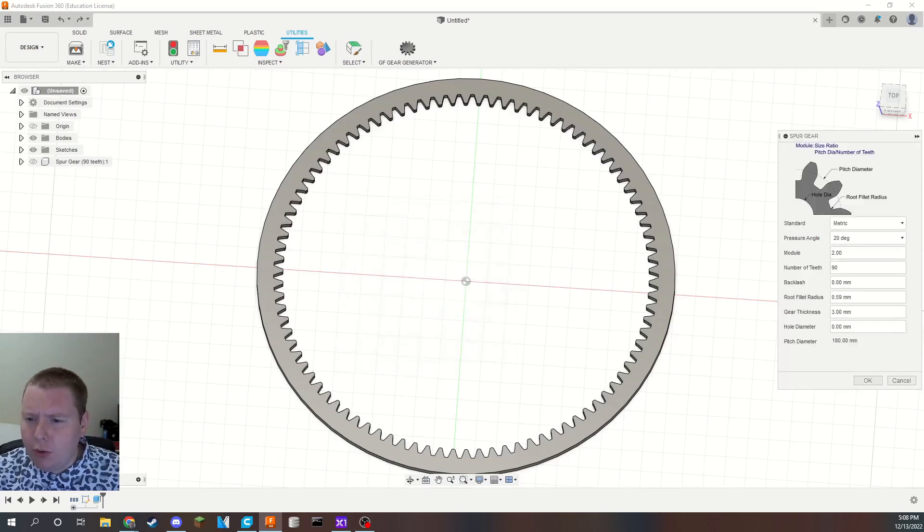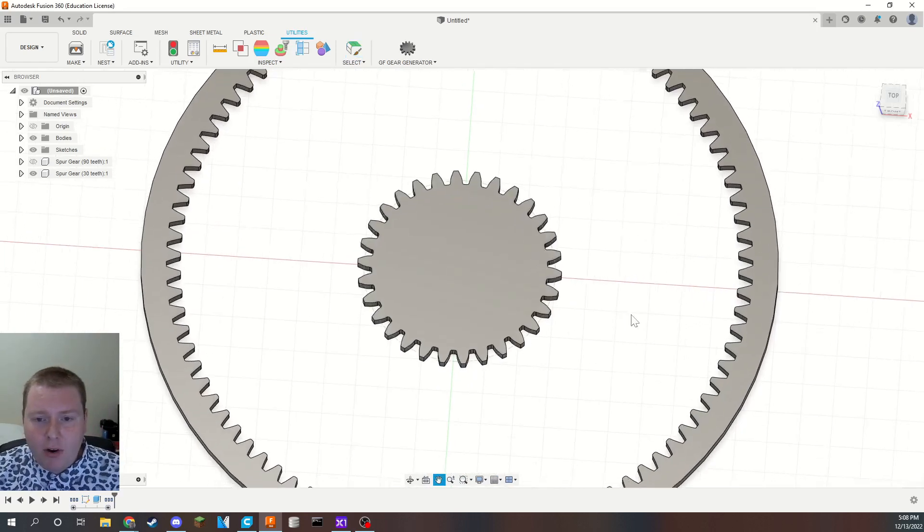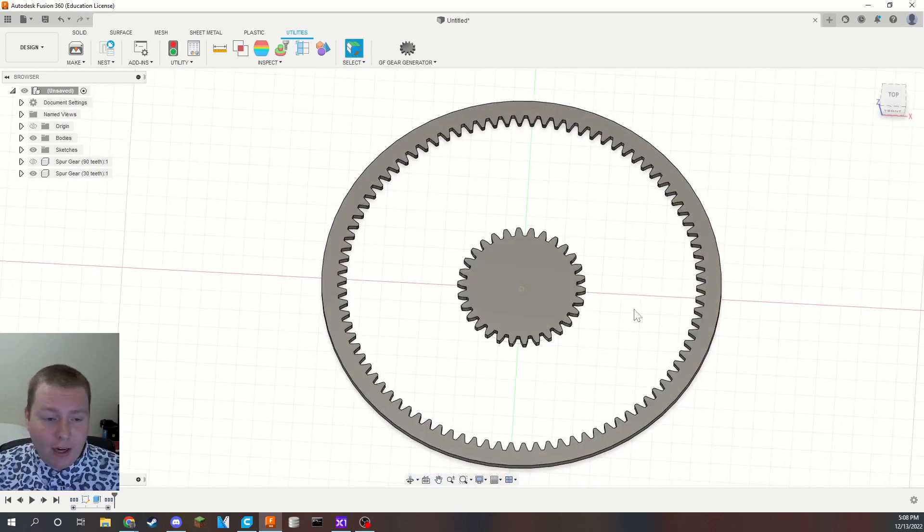We'll do module of two as well, otherwise they won't mesh. Number of teeth for this one, I don't know, maybe 30. I think that sounds good. And we'll generate that gear and there he is. So you've actually just made a sun and planet gear set. You might not have realized but this is exactly how you model a sun gear or that's one way that you could model a sun gear.